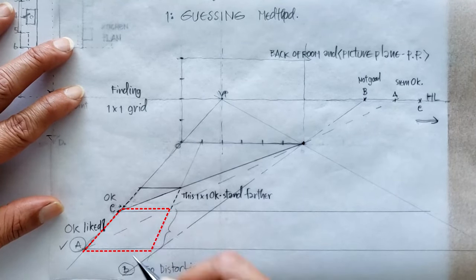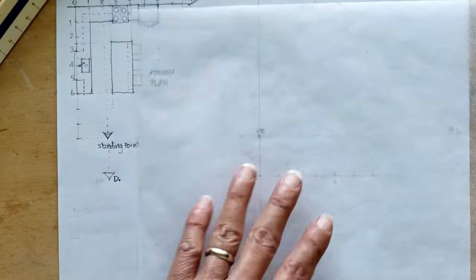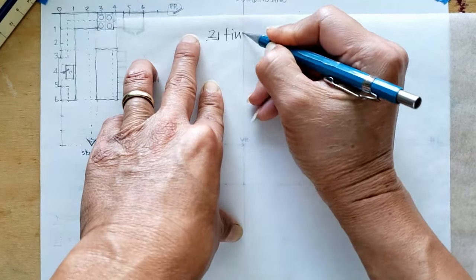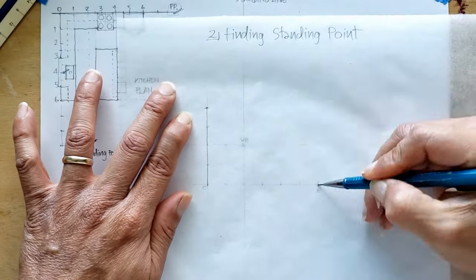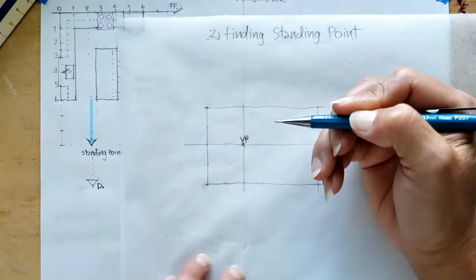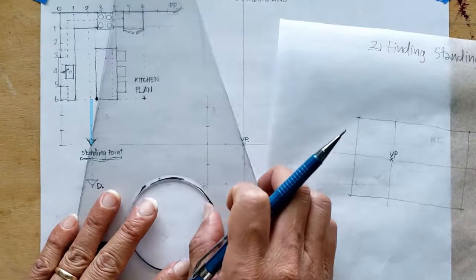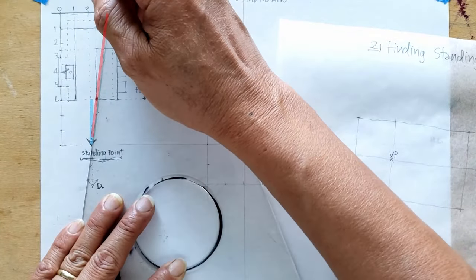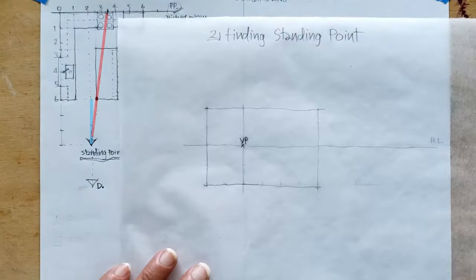The second method: finding a standing point. Whatever is showing in your plane - let's say in this plane we step three units away - first you have to find the closest point and project it to the picture plane, which is the back of the room in this case.